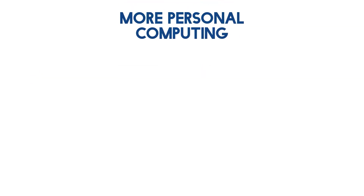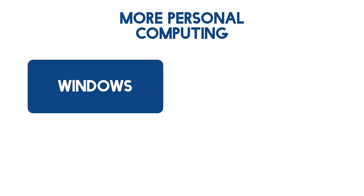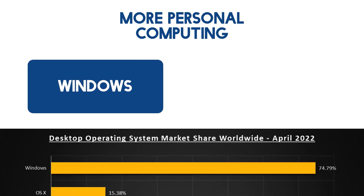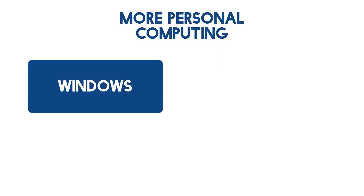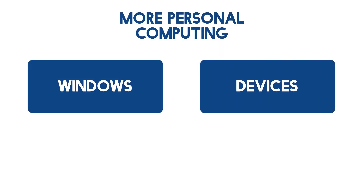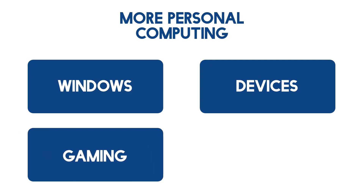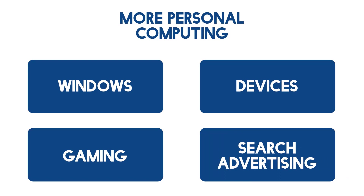And the last segment is more personal computing. This segment comprises of Windows — the sale and licensing of the Windows operating system, which is used on 75% of all desktop computers around the world. Also devices, including Microsoft Surface and PC accessories. Gaming, which is mainly the Xbox consoles plus content, games and services. And search advertising — display advertising and Bing search advertising.